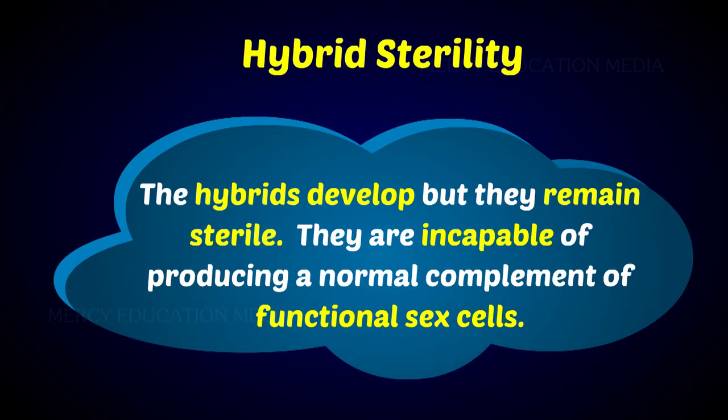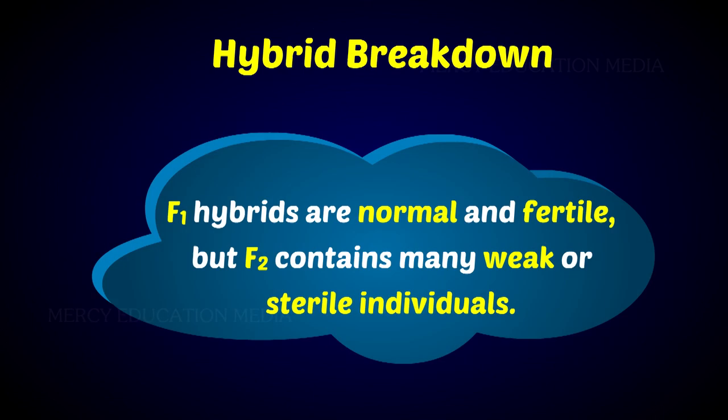What is hybrid sterility? The hybrids develop but they remain sterile; they are incapable of producing a normal complement of functional sex cells. What is hybrid breakdown? F1 hybrids are normal and fertile but F2 contains many weak or sterile individuals.